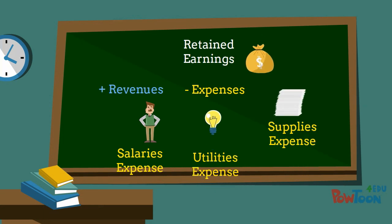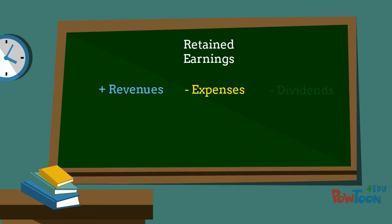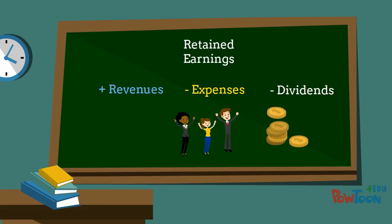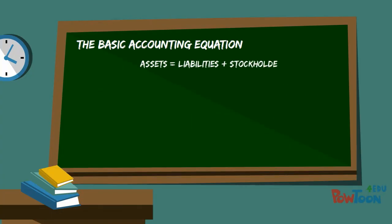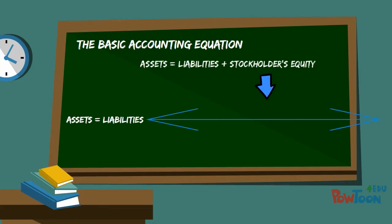Retained earnings also decreases when the company pays out dividends. Dividends are assets, usually cash, that are paid out to owners in exchange for their investment. So now we can take our basic accounting equation of assets equals liabilities plus stockholders' equity and expand our stockholders' equity section to instead list all the individual components.